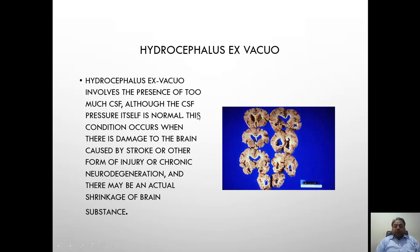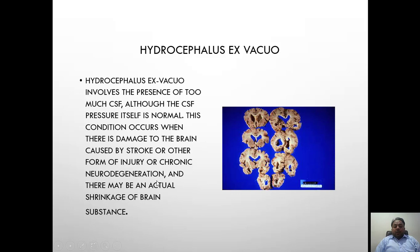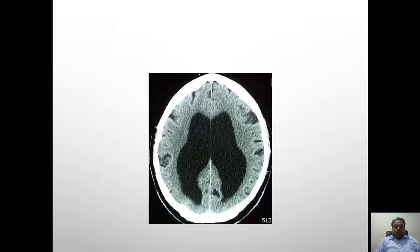Another cause of communicating hydrocephalus is hydrocephalus ex vacuo. In old age, there is a shrinking of the brain parenchyma and an increase in volume of the CSF — this is called hydrocephalus ex vacuo. The causes include previous strokes, other forms of injury, or chronic neurodegeneration as a consequence of old age. This CT brain of a patient shows hydrocephalus ex vacuo: the ventricles are dilated and enlarged, and there is also dilation of the subarachnoid space, which has become more prominent.